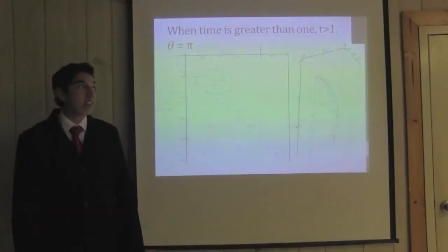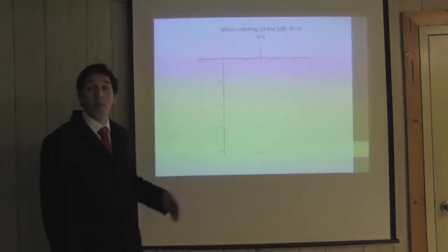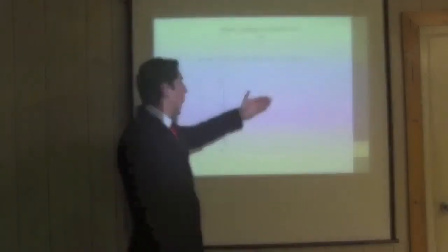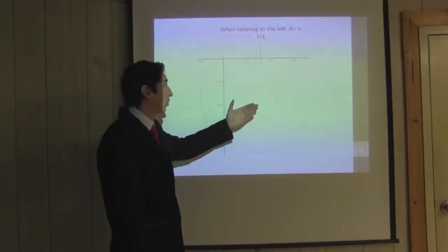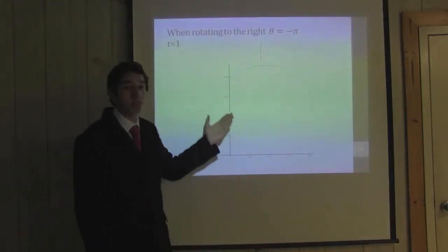When time is greater than 1 and theta is equal to pi, we could move the robot in circles. But when the time is equal to 1, we could almost complete one circle. When theta is equal to negative pi, we could go in the opposite direction.